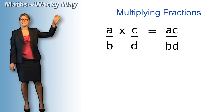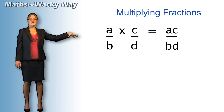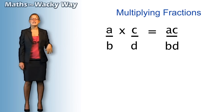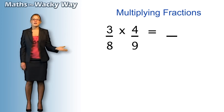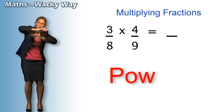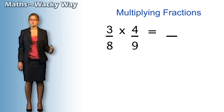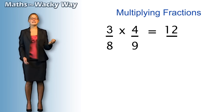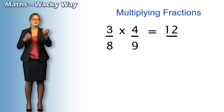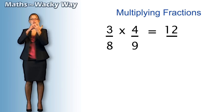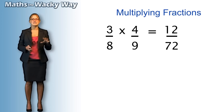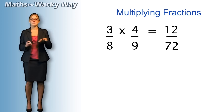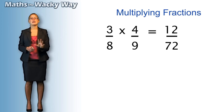So using a over b and c over d, we're literally going to times the a and the c, and the b and the d. Let's put some numbers in. If we have three eighths times four ninths, we are literally going to go pow, pow. Three times four is twelve. Eight times nine — the eighth finger goes down, we've got seven and two — seventy-two. So we have twelve on the top and seventy-two on the bottom.